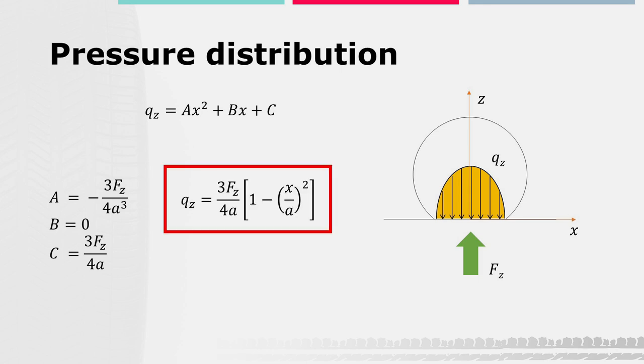The pressure distribution expression is thus 3Fz over 4a multiplied by 1 minus x over a to the power of 2.